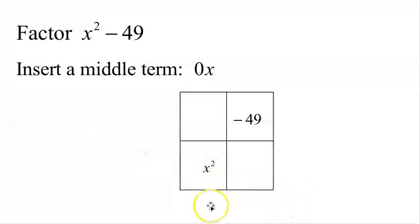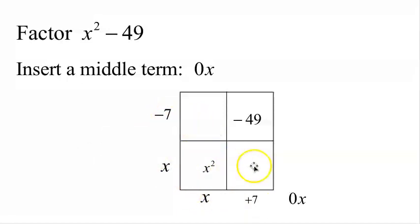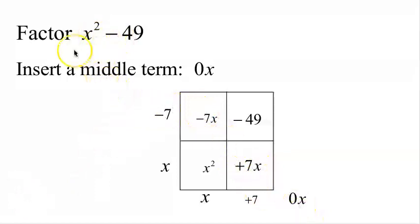The number going in the corner is 0x. What times what is x squared? The answer is x times x. So 0x is our middle term, and x times x is x squared. Now how do I build negative 49? The option that will work is negative 7 times positive 7. Negative 7 times x gives negative 7x, and positive 7 times x gives positive 7x. Negative 7x plus positive 7x is 0x, so we have successfully factored x squared minus 49.